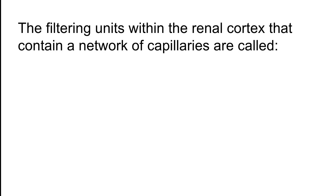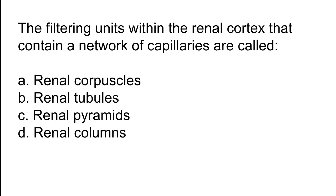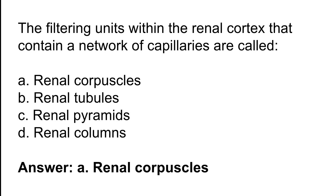The filtering units within the renal cortex that contain a network of capillaries are called? Options: A) Renal corpuscles, B) Renal tubules, C) Renal pyramids, D) Renal columns. The correct answer is option A. The filtering units within the renal cortex that contain a network of capillaries are called renal corpuscles.